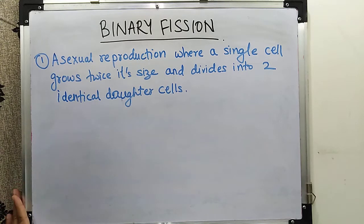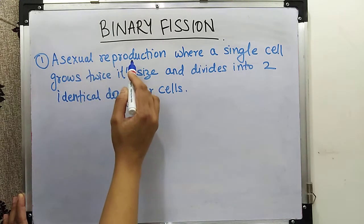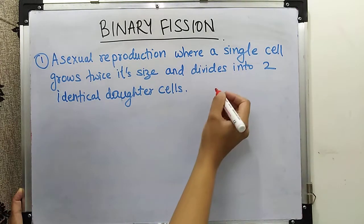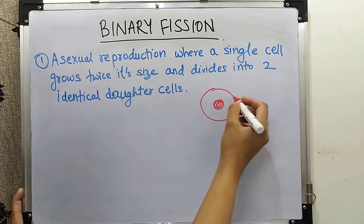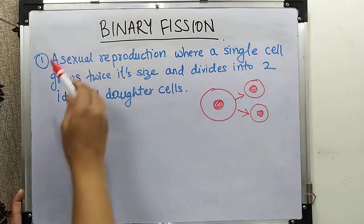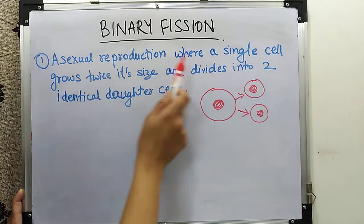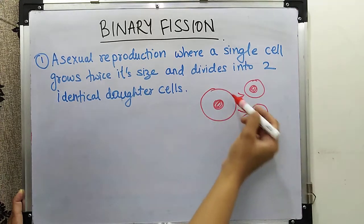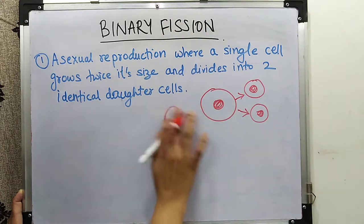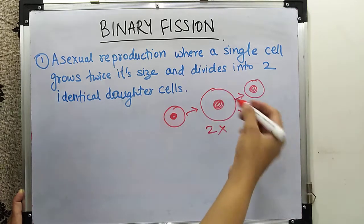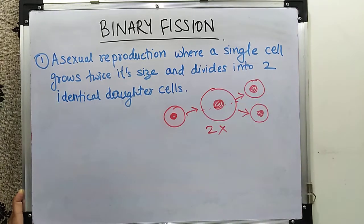Binary fission is a type of asexual reproduction where a single cell grows twice its size and divides into two identical daughter cells. The original cell increases — it becomes two times its size — and then it splits and forms two daughter cells that are identical to the parent cell. That is binary fission.